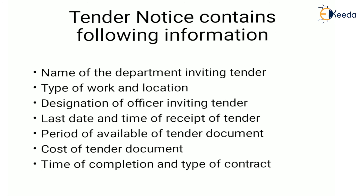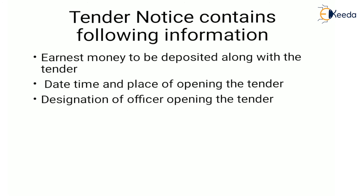The tender notice also contains: last date and time of receipt of tender, period of availability of tender document, cost of tender document, time of completion, type of tender, earnest money to be deposited along with the tender, date, time, and place of opening the tender, and the designation of the officer opening the tender. All this information will be present in a tender notice, as we have seen in the example of the tender notice in the paper article. That's all for this video, thank you.